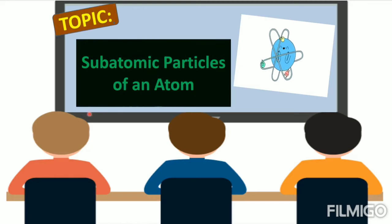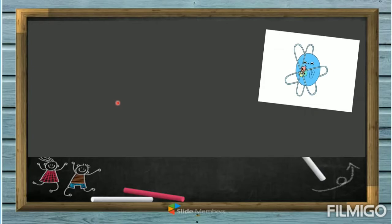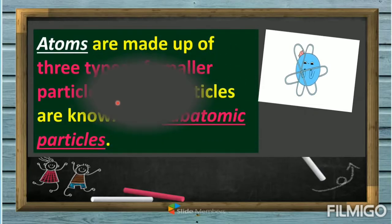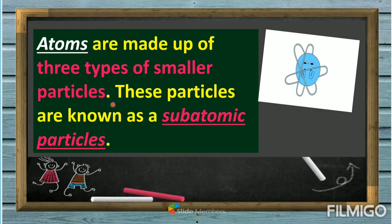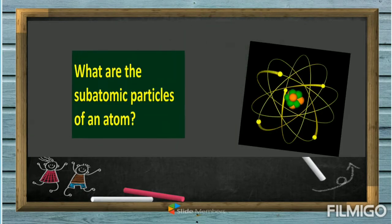Hello everyone! For today's topic you're going to learn the subatomic particles of an atom. One of our discussions last week was all about an atom — we defined an atom as the smallest particle of an element. This time, atoms are made up of three types of smaller particles, known as subatomic particles.